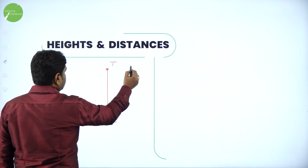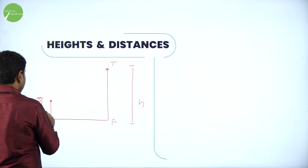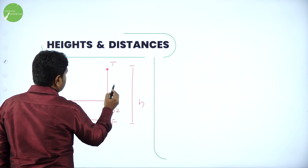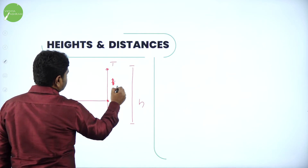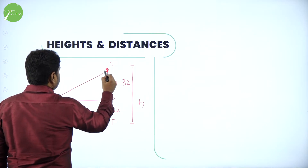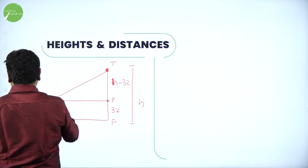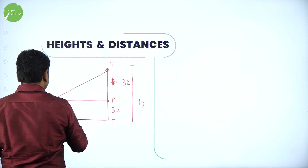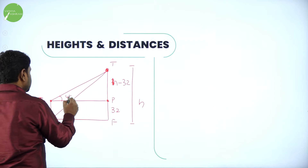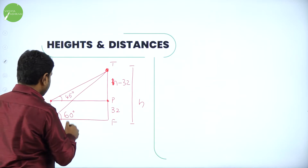BL is the building of 32 meters. The perpendicular from B to the tower means B to P equals 32 meters as well, and the remaining vertical distance from P to T is H minus 32. The angle of elevation from the top of the building is 45 degrees and from the bottom is 60 degrees. We have two triangles.